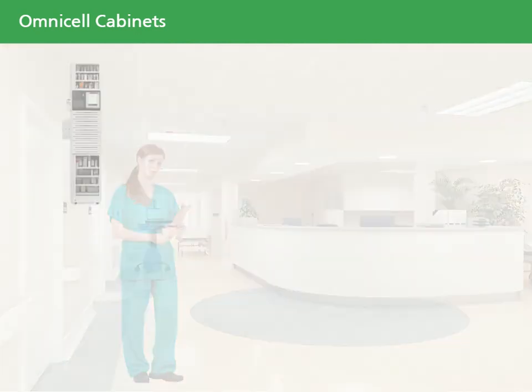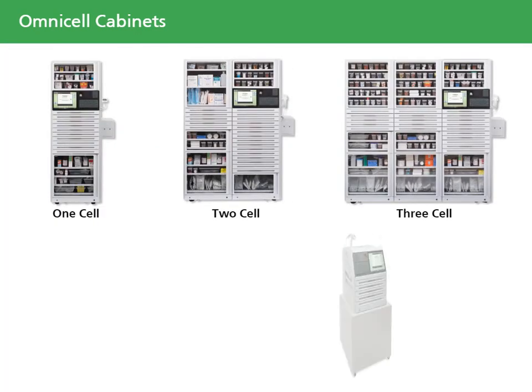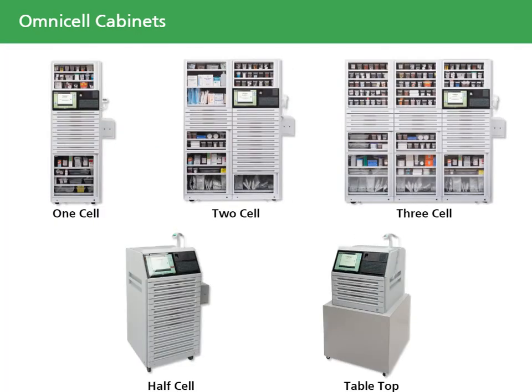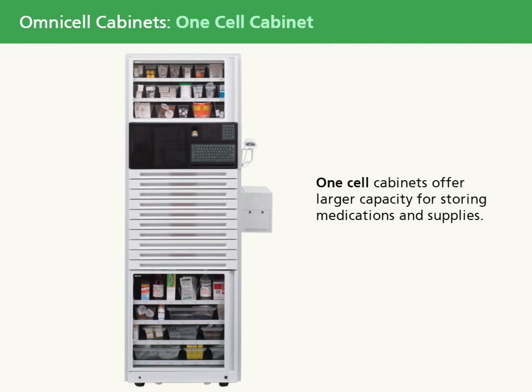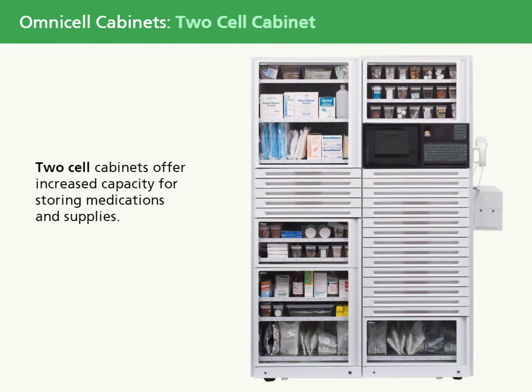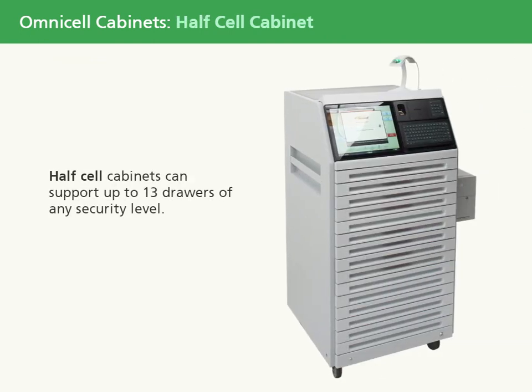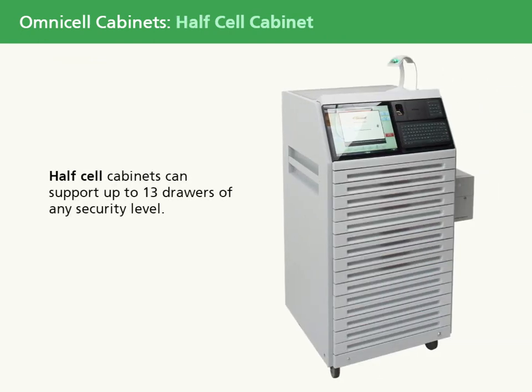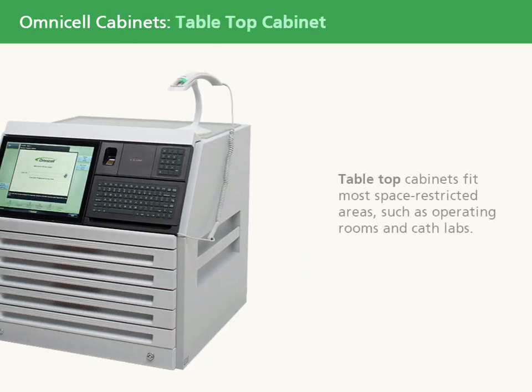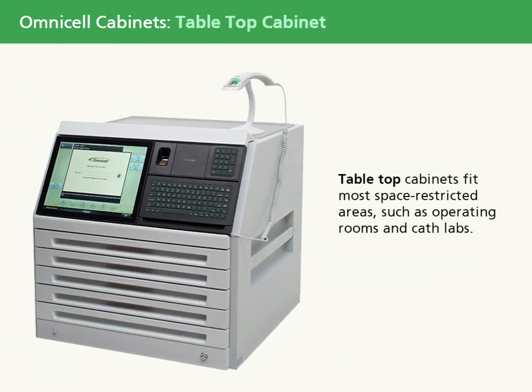OmniCell offers a variety of cabinets and cabinet configurations to fit your facility's needs. One-cell cabinets offer a larger capacity for storing medications and supplies. Two-cell cabinets offer increased capacity. Three-cell cabinets are OmniCell's largest and offer even more capacity. Half-cell cabinets can support up to 13 drawers of any security level. Tabletop cabinets fit most space-restricted areas, such as operating rooms and cath labs.